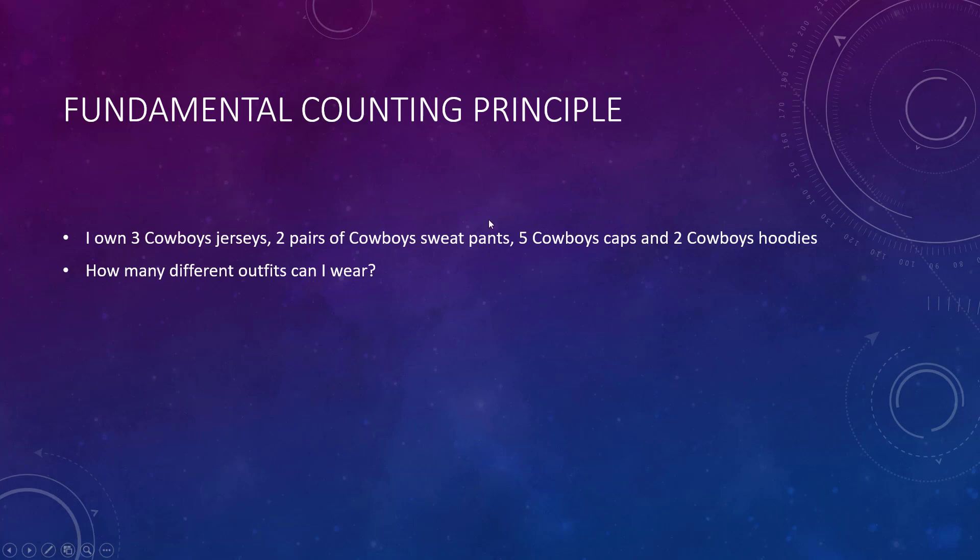Fundamental counting principle. You always see there was a Pizza Hut commercial where they talk about three different crusts, two different vegetables, five different meats and so on. How many different pizzas could you actually have? All you're doing is multiplying each. If I wanted to list out every single different outfit here I would have 60 different outfits. So you don't need all those clothes you think you need. What's the probability I wear one? One out of 60.